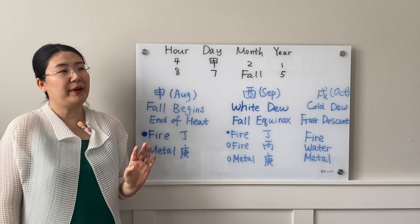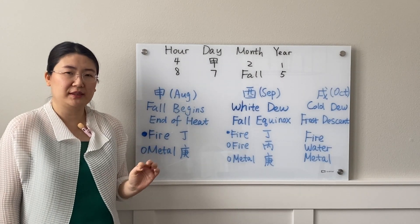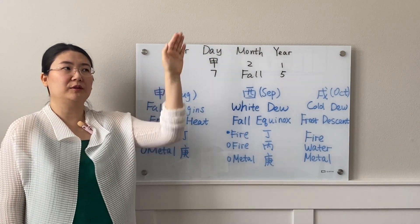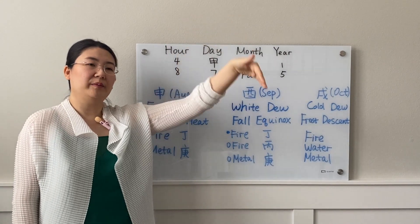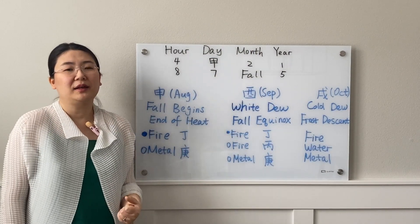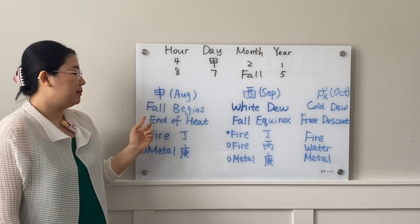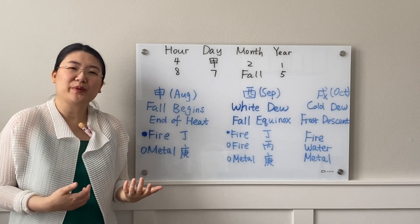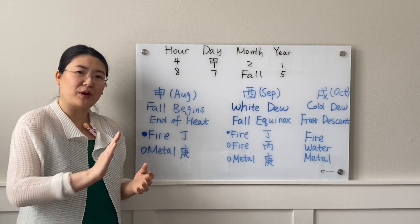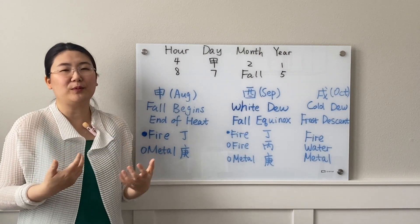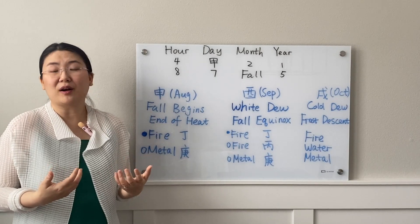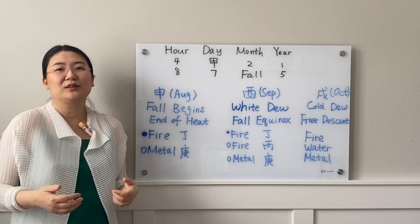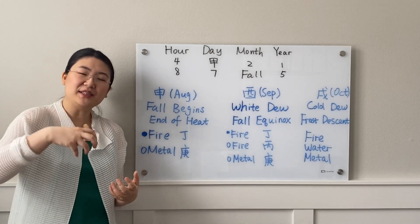Going back to the 12 stages of existence — that trend chart of growing up to adulthood, to prime state, and going back down before circling back again — for a life pattern of a tree, during springtime it's more growing up in a relatively wet environment. So the number one favorable element for spring Yang Wood is fire, to warm up the environment and have sunshine so you can grow healthy.